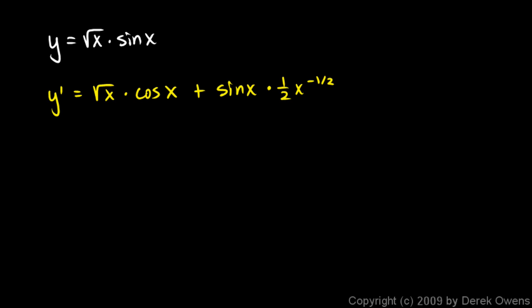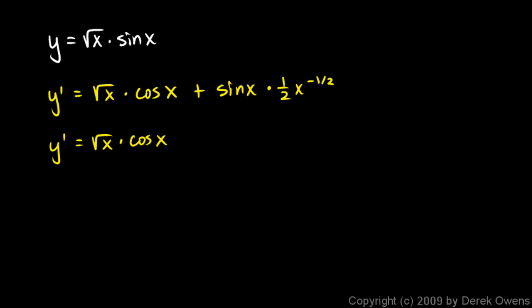Since our original equation was given in radical form, not exponent form, I'm going to write my answer in radical form as well. This term is already in radical form, so that's fine. So y prime equals the square root of x times the cosine of x, plus sine x in the numerator and 2 square root of x in the denominator.